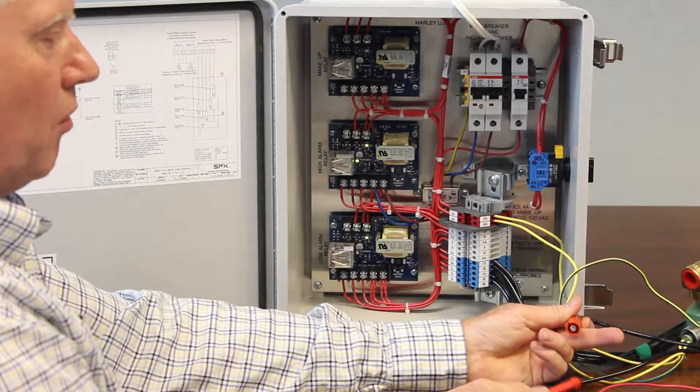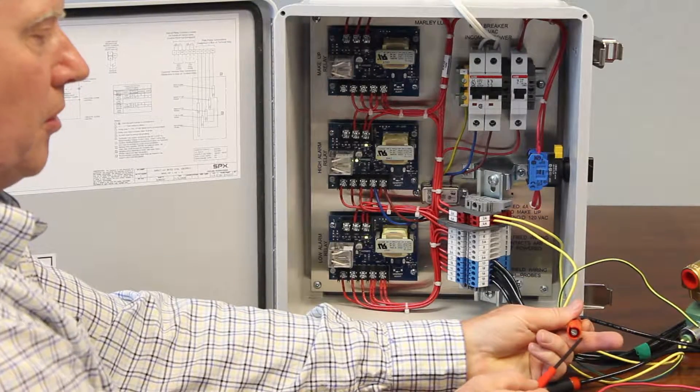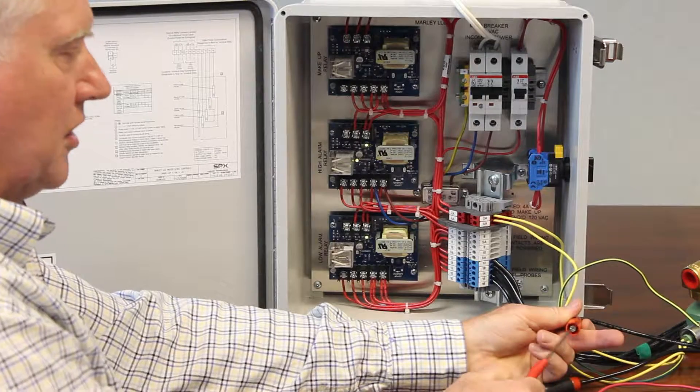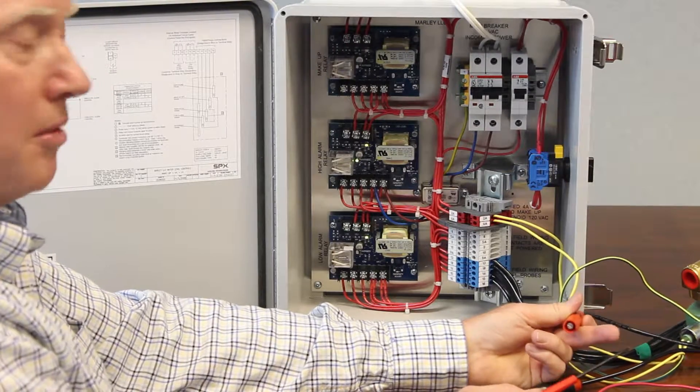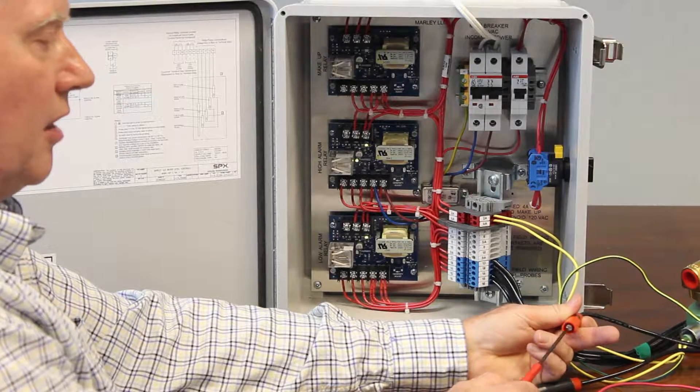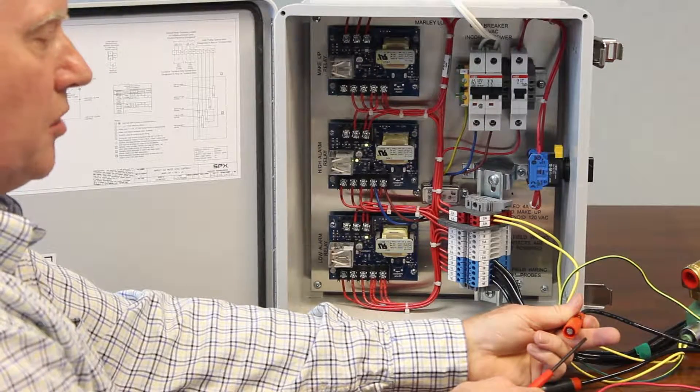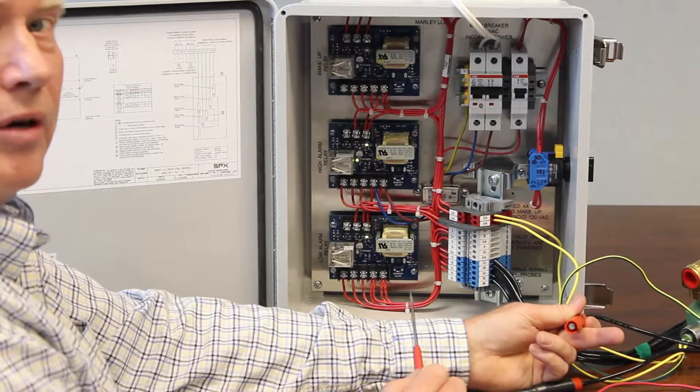And like we talked about before, these probe tips are replaceable, but they do get contaminants on them, whether it be dirt, mud, calcium deposits, whatever, it's a maintenance type of item. You have to clean them up once in a while or even replace them. And to replace them, you just simply unscrew them and put another one in.